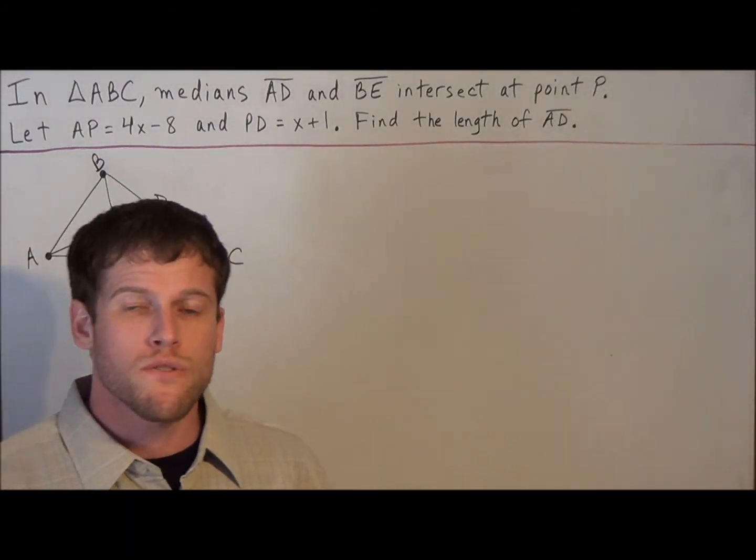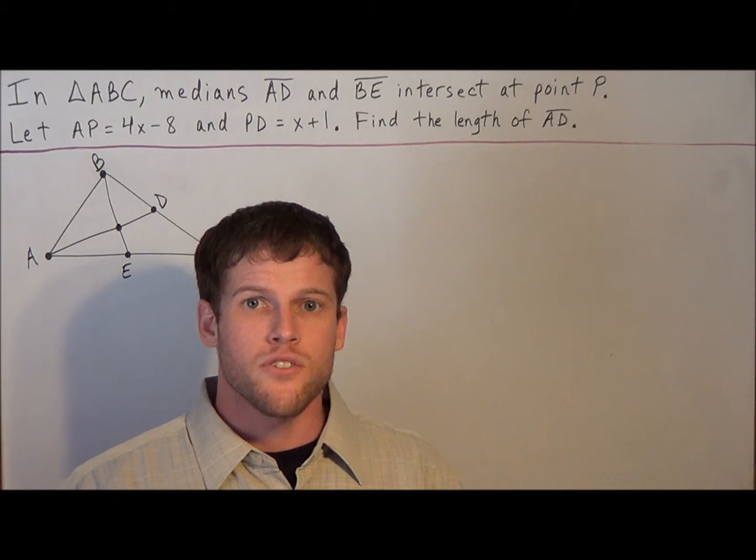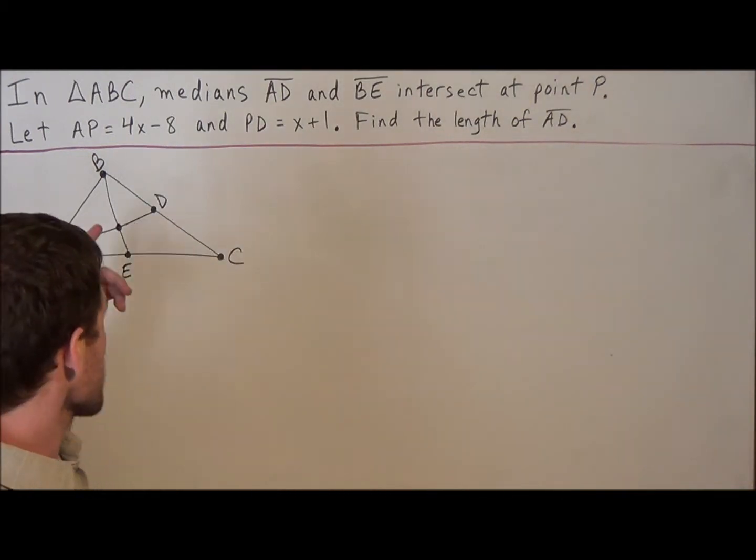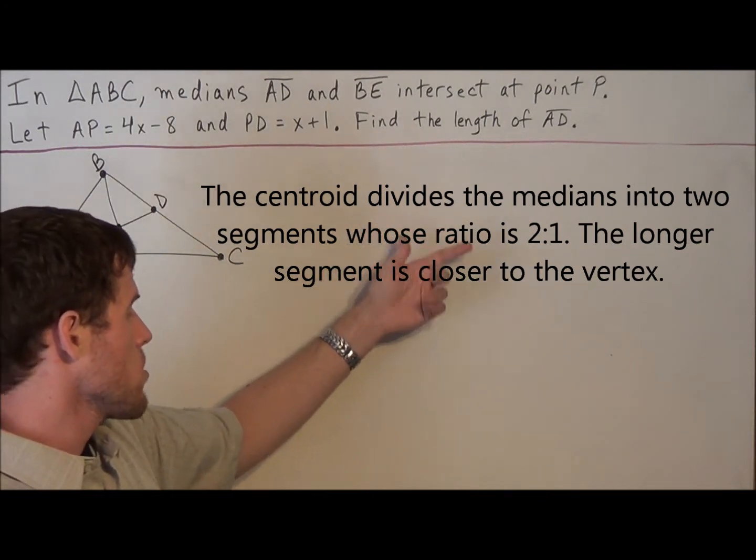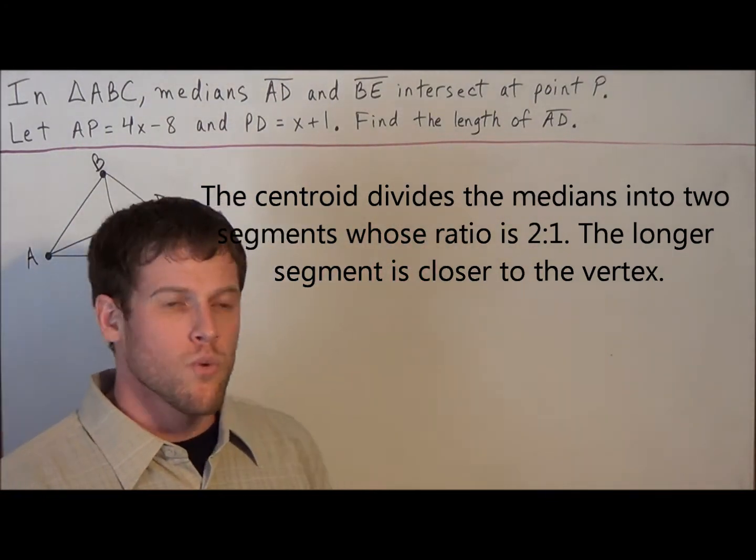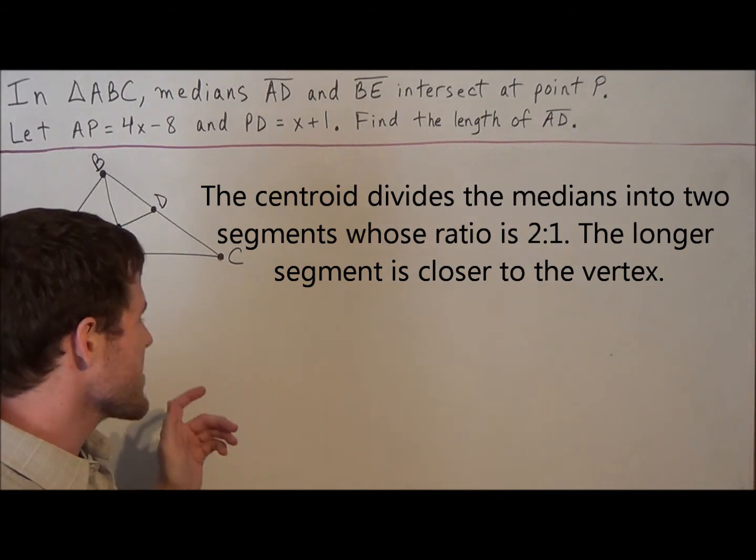So for this problem, there's a really useful theorem that deals with intersecting medians. They intersect at the centroid, and we know that the centroid divides the median into two segments, whose lengths are in the ratio 2 to 1, and the longer segment is nearest the vertex.